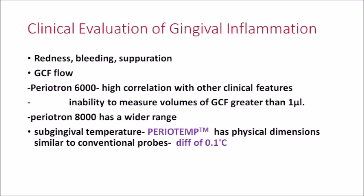Traditional techniques are always our first-hand help. To detect gingival inflammation, we do clinical evaluation of the gingiva, which includes examining for redness, bleeding, and separation. We can also examine for GCF flow. Redness, bleeding, and separation can be seen with the naked eye. For GCF flow, we have the Periotron — Periotron 6000 and Periotron 8000. Periotron 6000 has high correlation with clinical features, but was unable to measure GCF volume greater than one microliter.